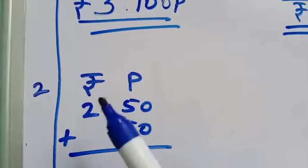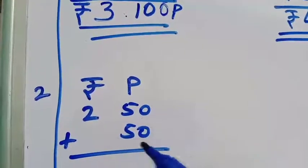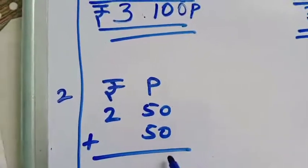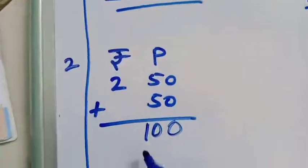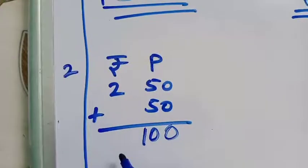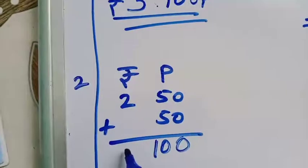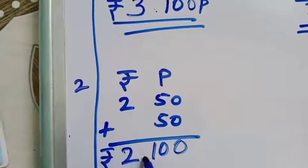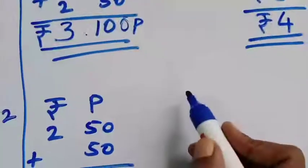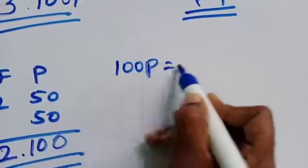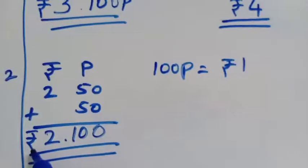In the Rupees column write 2, and in the Paise column write 50 + 50. Adding: 0 + 0 = 0, and 5 + 5 = 10, giving 100 paise. So we have ₹2 and 100 paise. We need to convert: 100 paise = ₹1.